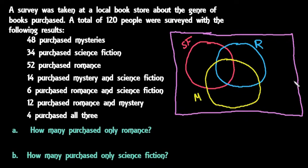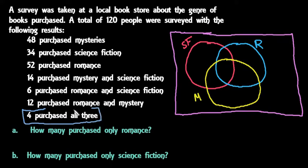Anything on the outside means they did not purchase from these three categories. Where you always want to start, no matter what you have, is with the intersection of all three. Since 4 people purchased all three, this is our starting point. From there we're going to work backwards, going up the list.